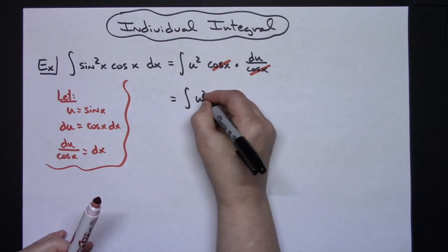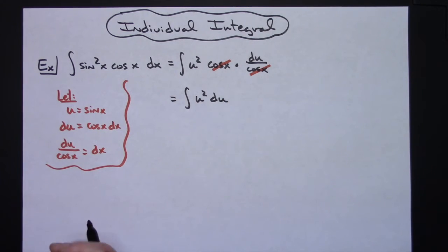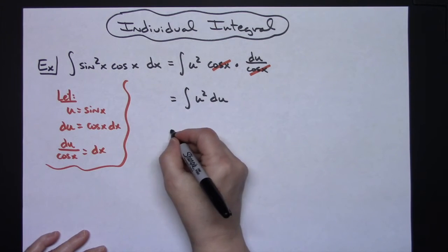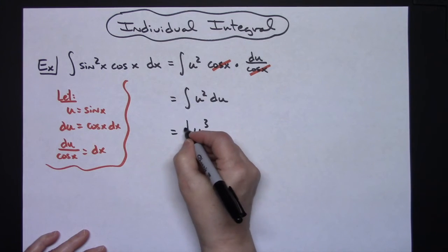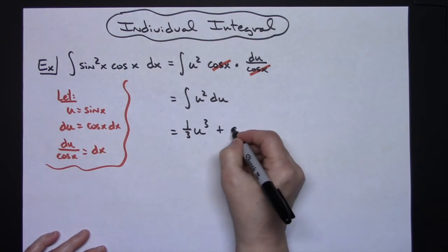At this point, I can just integrate easily here. I can add one to my exponent, so I'll have u to the third, and then in front I'll have that one third, plus c.